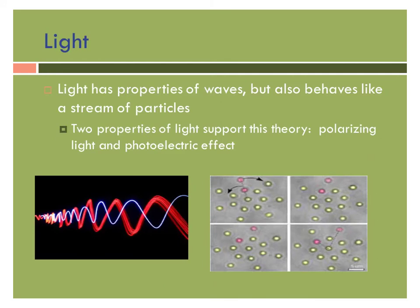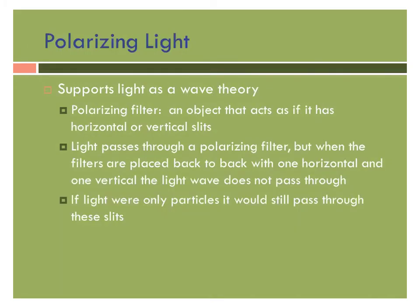Light is kind of interesting in how it behaves because it has properties of waves that we've been talking about with matter moving into crest and trough shapes, but it also behaves like a stream of particles that has random motion. Two properties of light support this theory and they're called polarizing light and photoelectric effect.